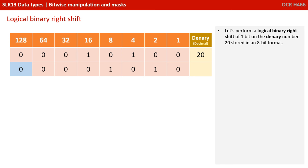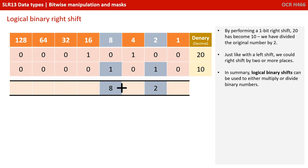We pad the leading space under the 128 column with a 0. In effect, we have half the number — we have divided it by 2 when we shift to the right by one bit. Just like the shift to the left, we don't have to shift to the right by just one bit at a time. Binary left and right shift can be used to multiply and divide binary numbers.